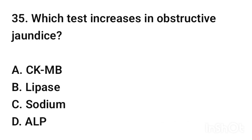Question number 35. Which test increases in obstructive jaundice? The correct answer is option D: ALP (Alkaline Phosphatase).